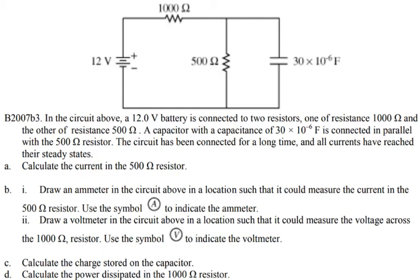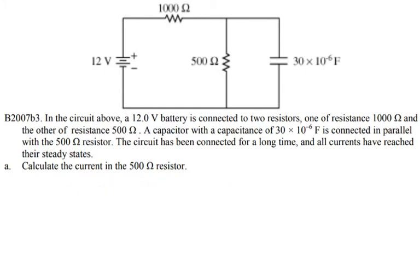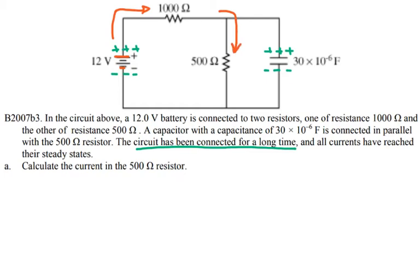Pause and look at parts A, B, C, and D on screen — try to solve as many as you can before watching my solution. When they say the circuit has been connected for a long time, that means the capacitor is fully charged. So the positive side is fully charged, and the charges on both sides match exactly — meaning there is no current flowing through the capacitor. All the current flows through the two resistors, so it's the same as having the capacitor branch disconnected, leaving two resistors in series.